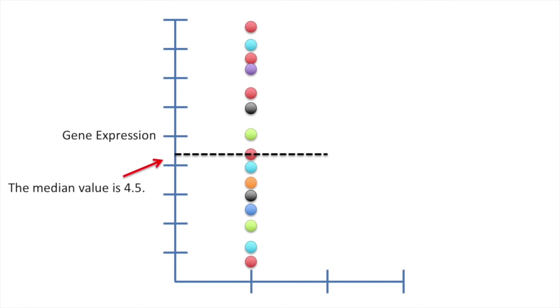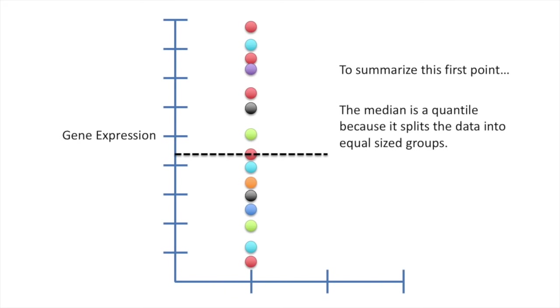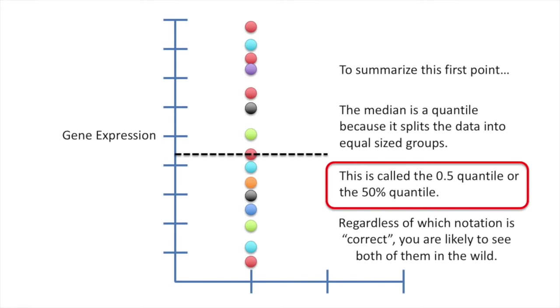The median value is 4.5. Thus, the 50% or 0.5 quantile value is 4.5. To summarize this first point, the median is a quantile because it splits the data into equal sized groups. This is called the 0.5 quantile or the 50% quantile. Regardless of which notation is correct, you're likely to see both of them in the wild. So let's just roll with it and not get too bent out of shape over the nomenclature.